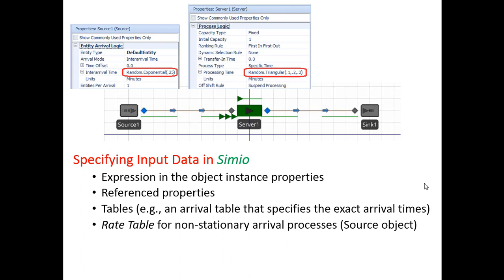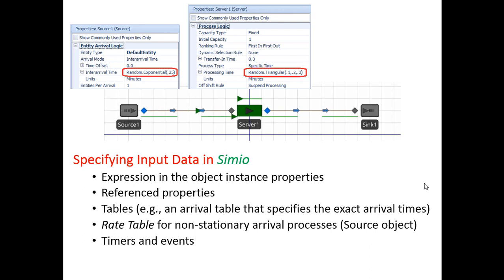You may also use a rate table especially when you have a non-stationary arrival process. We can also use timers and events — you specify an expression in a timer element, and whenever this timer goes off an event is triggered and something happens in your model. We may also use events that occur in the model. For example, consider a conwhip queuing model where you want to maintain a constant amount of work in progress. Every time a part leaves the system you want to create a new part, so the event of an entity leaving triggers an arrival into your system.